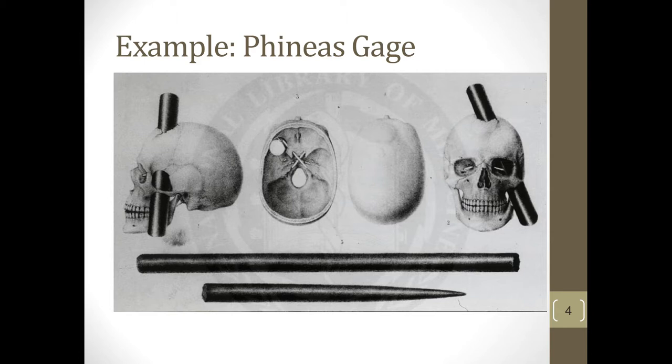The interesting thing about Phineas Gage is that this happened and he was able to speak intelligently afterwards. Part of the reason was because the speech centers of his brain weren't actually damaged. He got up, was speaking with people, telling the doctors what had happened to him — all while having a massive railroad spike sticking out of his brain. At one point he threw up, and a portion of his brain fell out. This man survived and lived just fine.